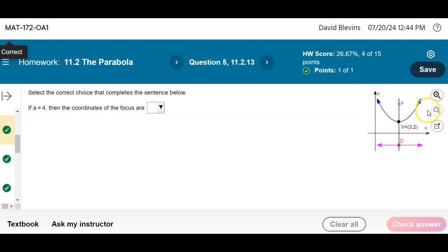Well, because this thing opens upward, not left and right, to get from the vertex to the focus we move up or down, again depending on the sign. But since A is positive four, we're moving up to get to the focus. And we move up four units from the y coordinate of the vertex. So adding four to two, we'll get three, six is where we'll end up for our focus.